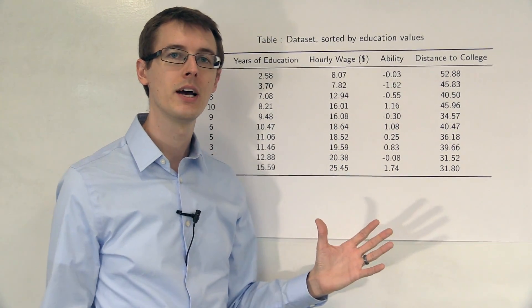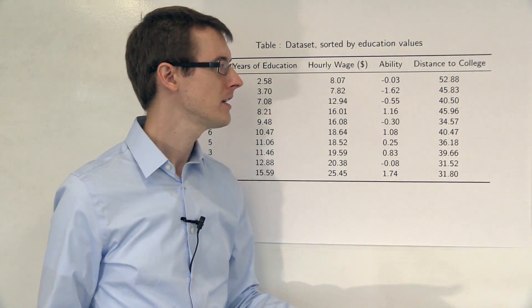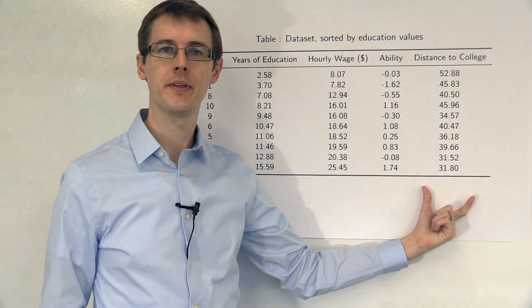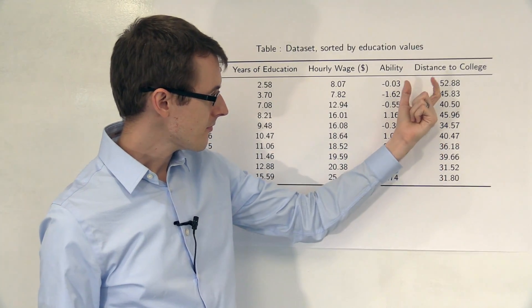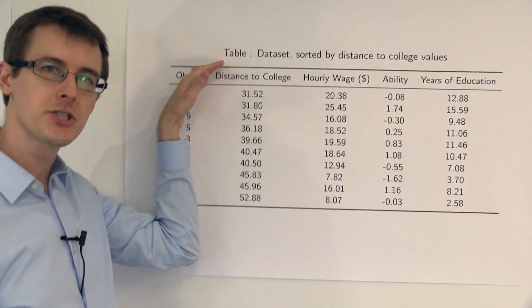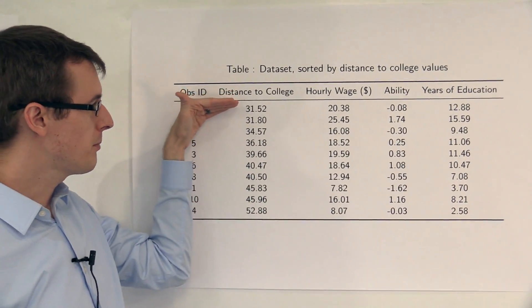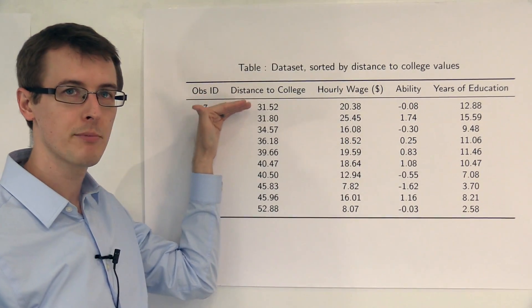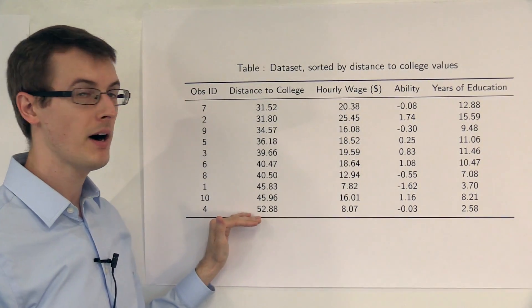So what do we do? That's where the instrument comes in. So this distance to college instrument that I talked about. We see that if we take distance to college and just resort the same data so that now people who live closer to college are at the top and people who live farther at the bottom...